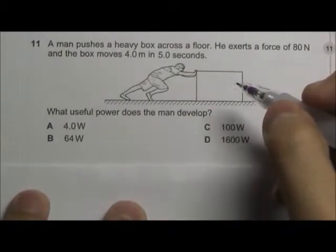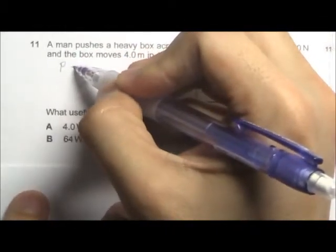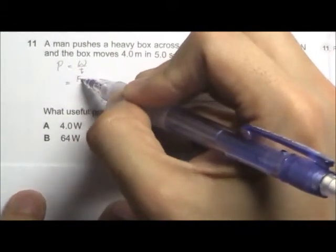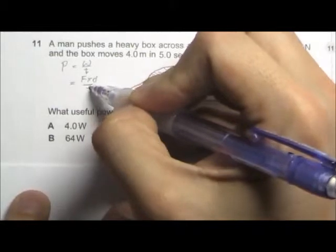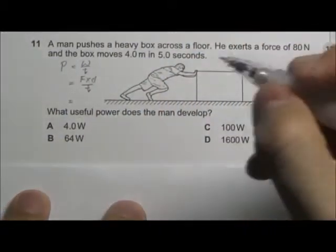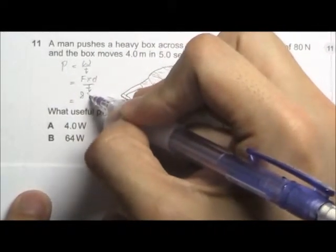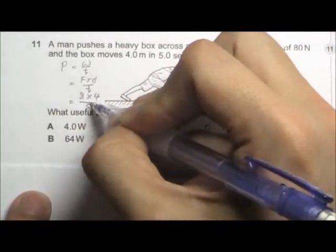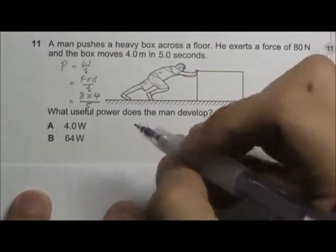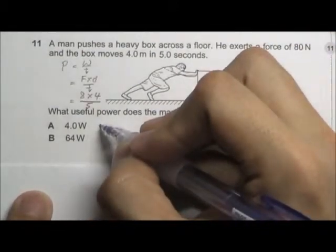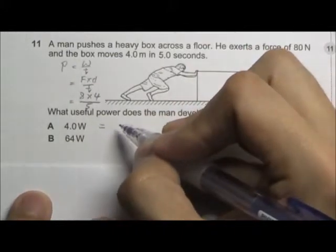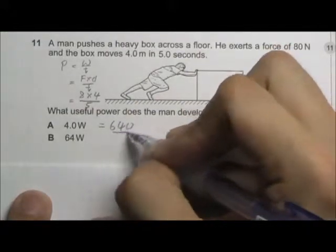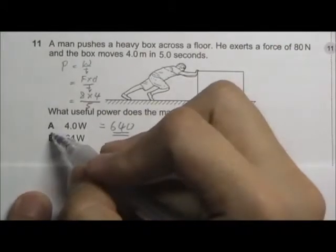So the useful power developed by the man will be power equals work done over time. And work done equals force times distance over time. The force in this case is 80 Newton, distance 4 meters, and time taken is 5 seconds. So the answer that we get here is 64 Watt, answer B.